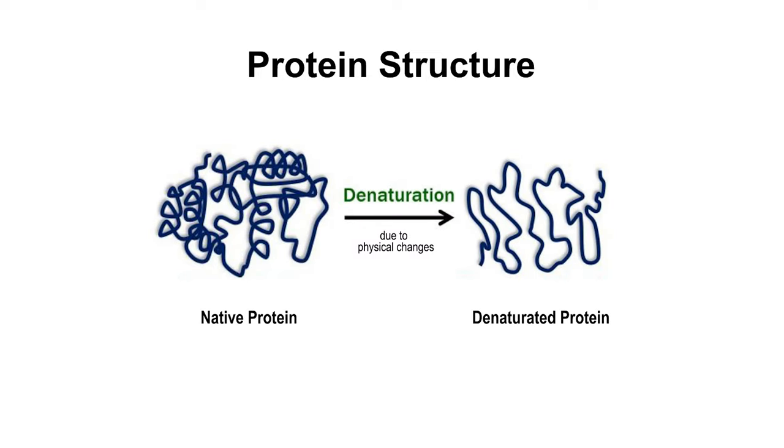During denaturation, secondary and tertiary structures are destroyed but primary structure remains intact. The coagulation of egg white on boiling is a common example of denaturation.